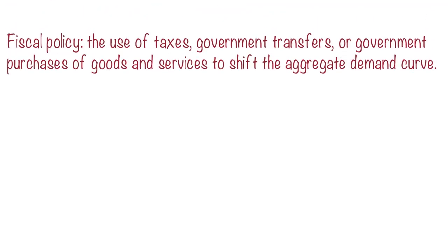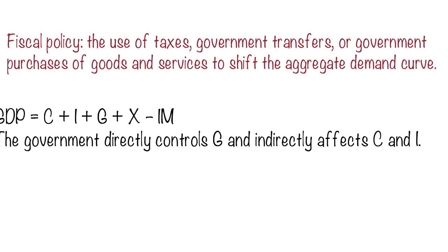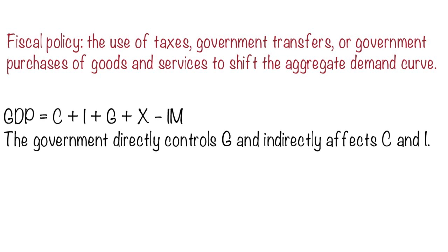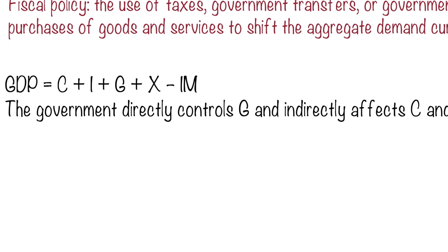Fiscal policy is the use of taxes, government transfers, or government purchases of goods and services to shift the aggregate demand curve and to manage demand in the economy. Governments try to manage the public side — they can do this directly through government spending, represented by G in the equation, but they also indirectly affect consumption and investment through tax rates, so they have a broad range of influence on the economy.